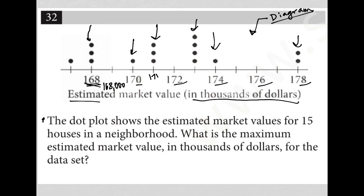Well the maximum must be over here at 178,000, right? We have two homes that have a market value of 178,000. That would be the maximum estimated market value given the options that we have here. So our answer should be 178.